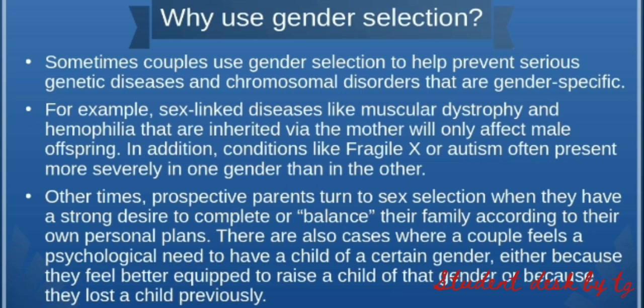For example, sex-linked diseases like muscular dystrophy or hemophilia — if the mother is a carrier, these conditions will affect only male offspring, because males have only one X chromosome. If the mother carries the gene on that X, the male will be affected. But females, having two X chromosomes, are not affected in the same way. So this is how we can determine whether there will be a disorder.